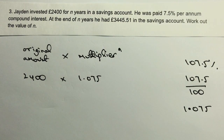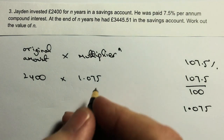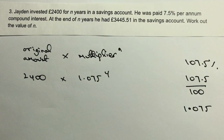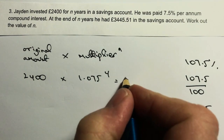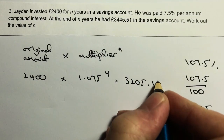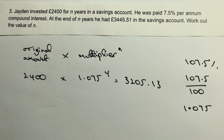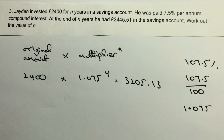I don't know the number of years, so I'm going to take a guess — I'll say four years. Working that out gives £3205.13, which is not the £3445.51 I'm trying to reach, so I'm going to guess again.